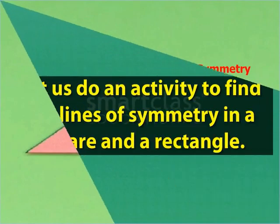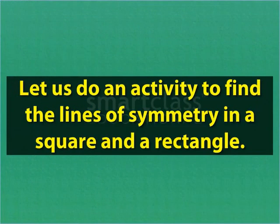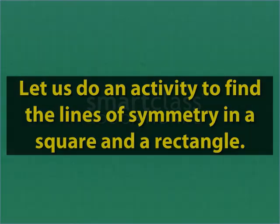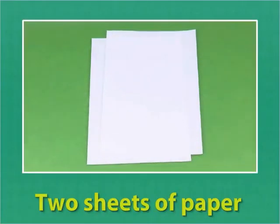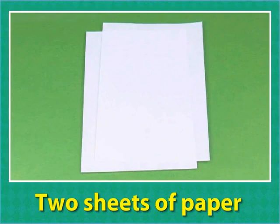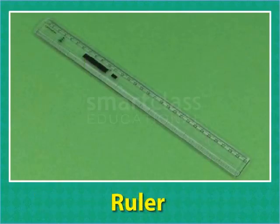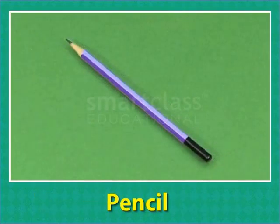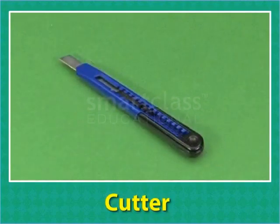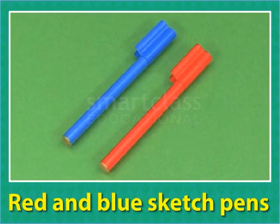Let us do an activity to find the lines of symmetry in a square and a rectangle. For the activity we need two sheets of paper, a ruler, a pencil, a cutter, and two sketchpens — red and blue.